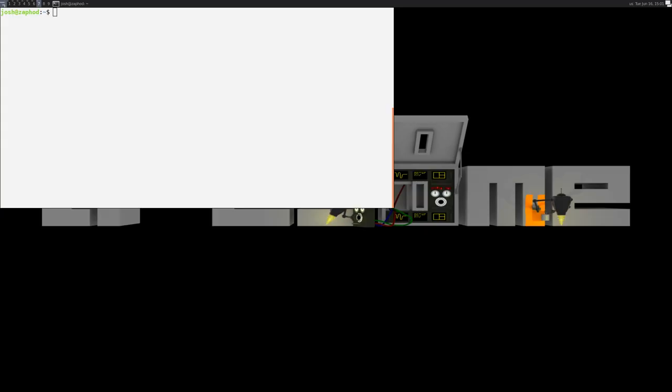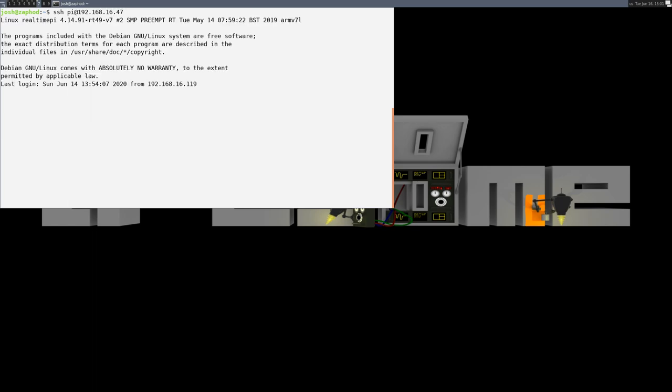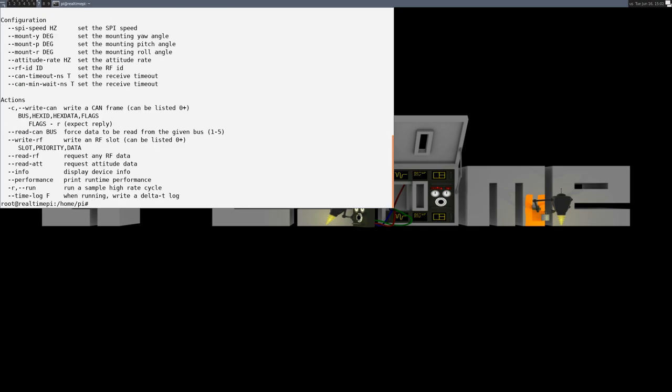After connecting to the access point using the credentials listed in the documentation, we'll SSH to the IP address as configured from MJBots, 192.168.16.47. Then we'll sudo bash to get a root console. Now we can try running Pi 3 hat tool to explore different options.